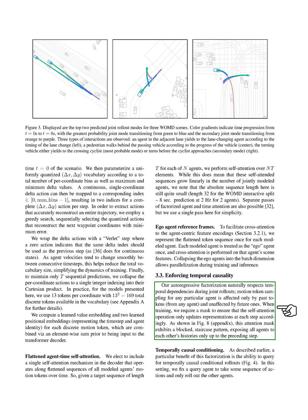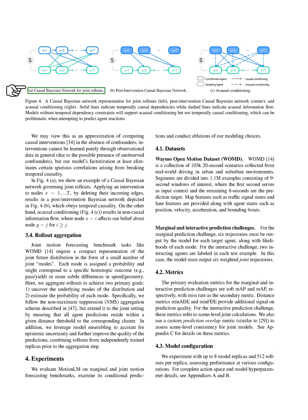We also use a method called temporally causal conditioning. This allows us to predict the actions of all agents in the scene based on the actions of a single query agent. This can be seen as a way of approximating the effect of interventions in a causal network, even when there may be unobserved factors influencing the agent's actions. We illustrate this concept with a causal Bayesian network, where intervening on certain nodes results in a network that obeys temporal causality.